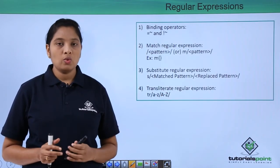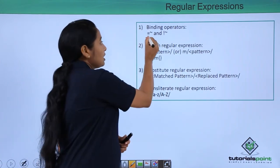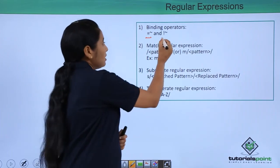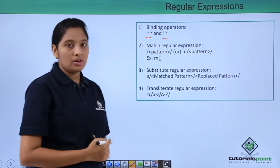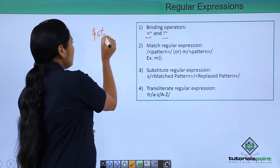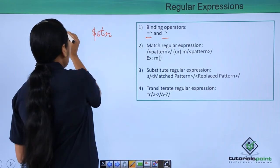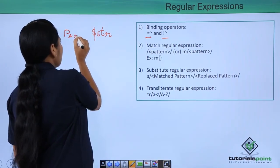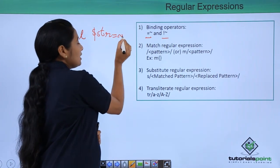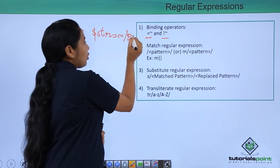Firstly, if you want to match a string, then you have to use binding operators. This is to match a string, and to not match a string is this one. For example, if I have a variable called string and I want to match whether the word pearl is there or not, I have to use the equal to tilde symbol and then use the matching operator followed by the pattern.